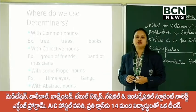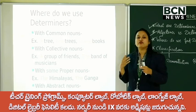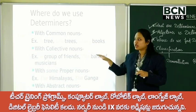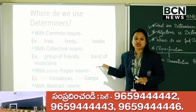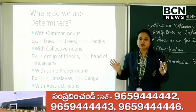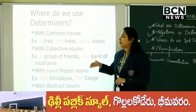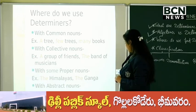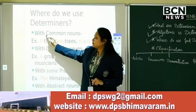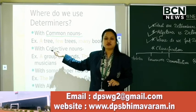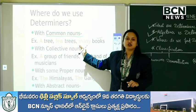Next we are talking about the usage of determiners. We know determiners are used with nouns. But what type of nouns do we use determiners with? With common nouns. Tree is a common noun, book is a common noun. Determiners come with common nouns.